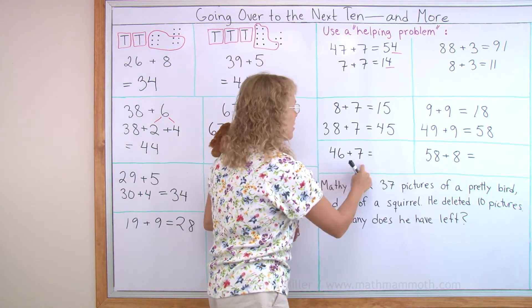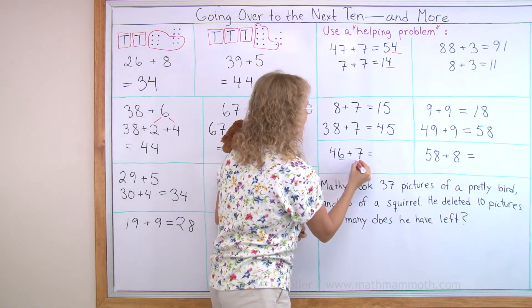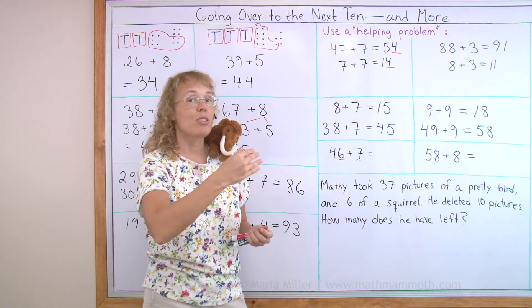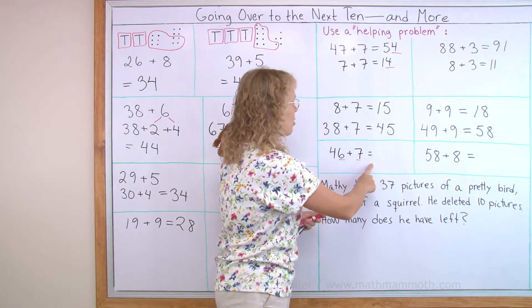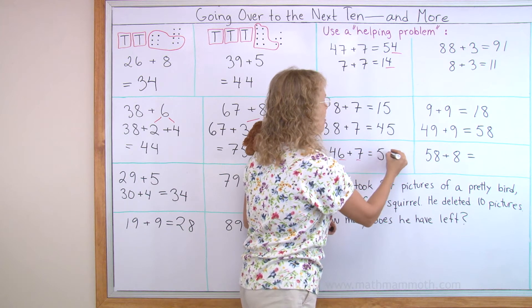46 plus 7. Our helping problem is 6 plus 7, which is 13. It is 10 and 3. It goes 3 over the 10. And so this one here will go 3 over the next 10. It will be 53.